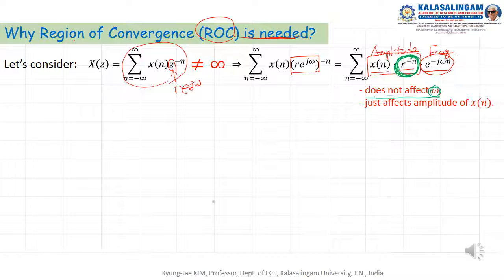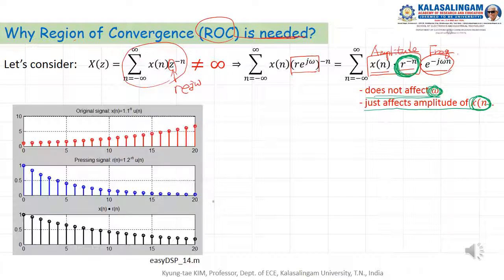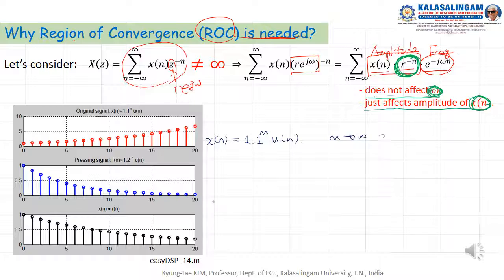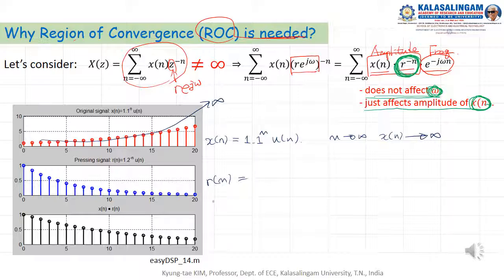Therefore, this term does affect the amplitude of X of N. For example, given x of n equal to 0.1 to the power of n times u of n, we can also write x of n as 0.2 to the power of n times u of n.